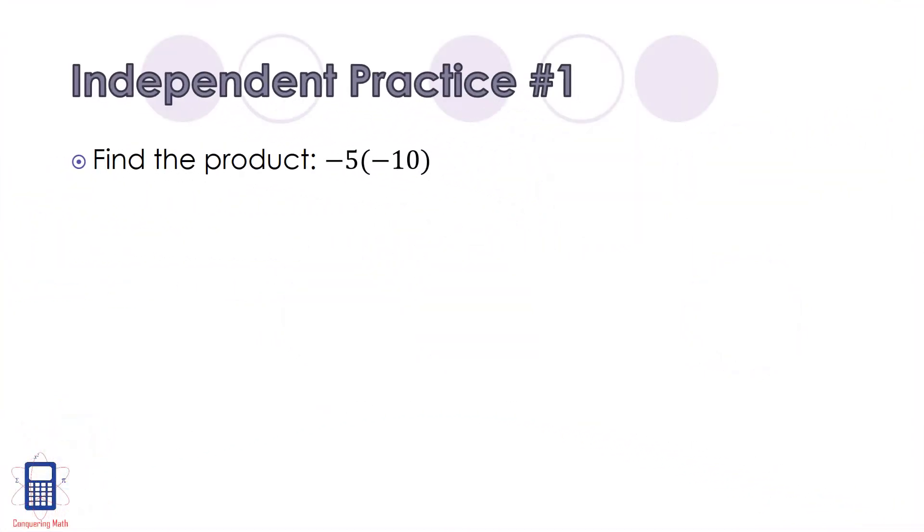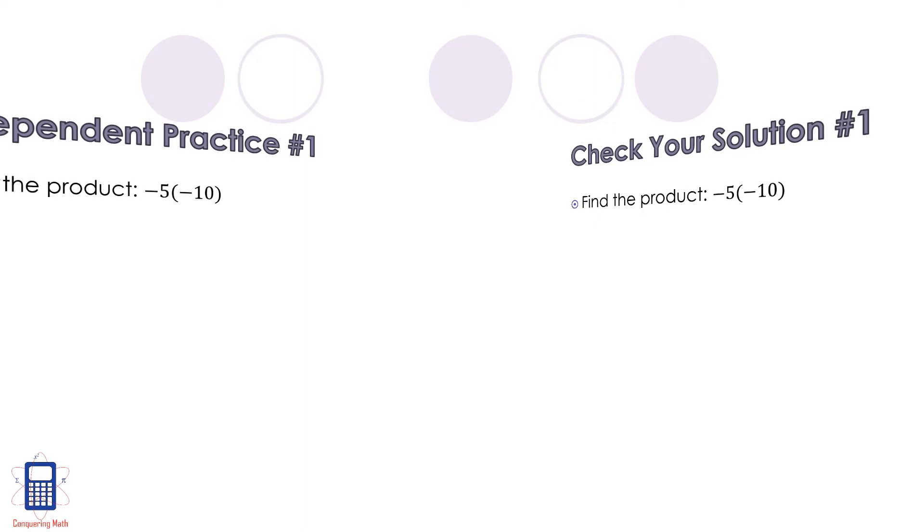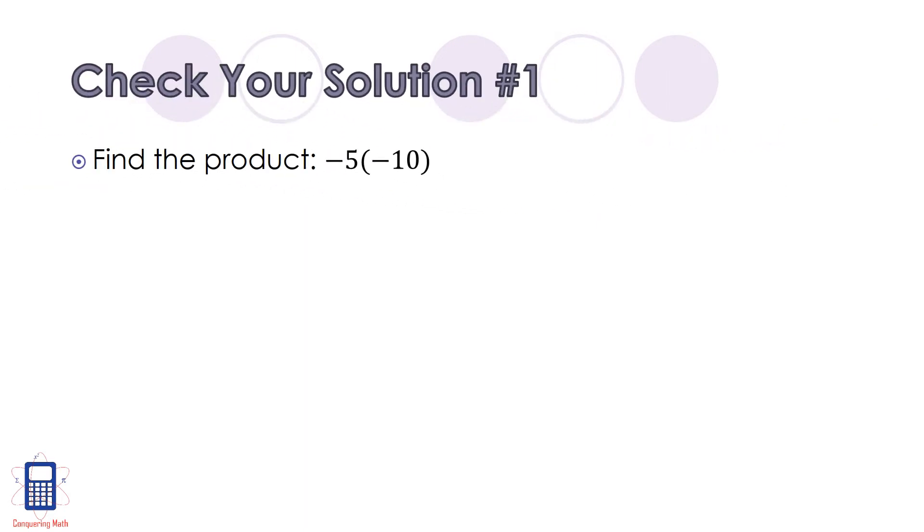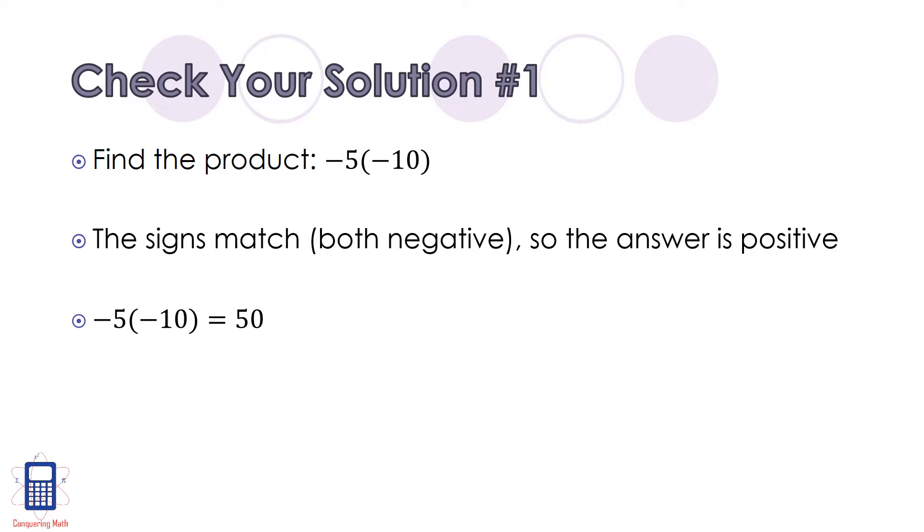Independent practice number 1: find the product of -5 times -10. First, we have to look at the signs of the two numbers. Since they're both negative, that means they match, and that means the product will be positive. At this point we just multiply normally. 5 times 10 would be 50, so -5 times -10 is also 50.